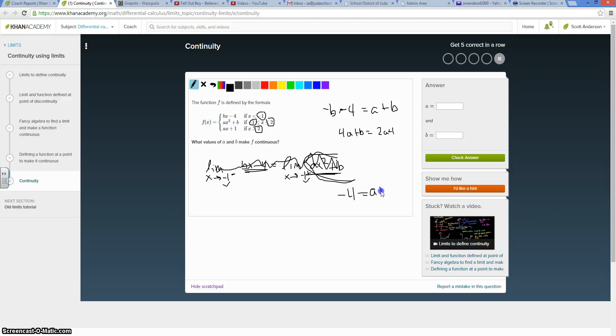In the bottom equation, if I move 2a to the other side, I get 2a plus b equals positive 1.